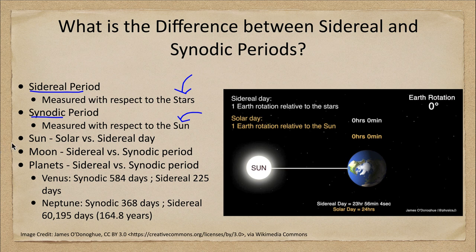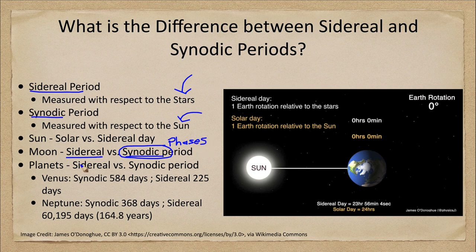How about the moon? The same thing happens for the moon. We have a sidereal period for the moon and a synodic period for the moon. The synodic period is what we're used to — that is the phases, the cycle of phases, which is about 29 and a half days. The sidereal period is a little over 27 days. When the moon is orbiting around the earth, it takes almost a month, and in that time the earth-moon system has moved around the sun. It takes a couple of extra days to get back to the same orientation relative to the sun to get the same phase of the moon.